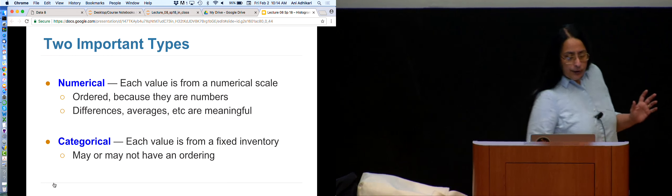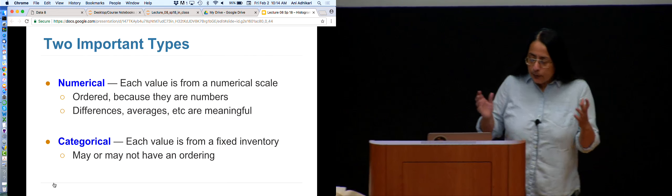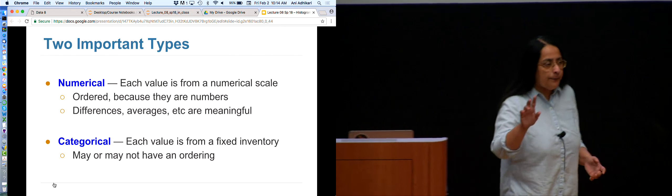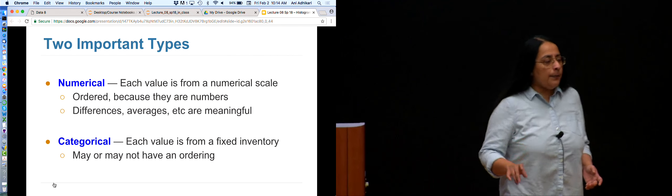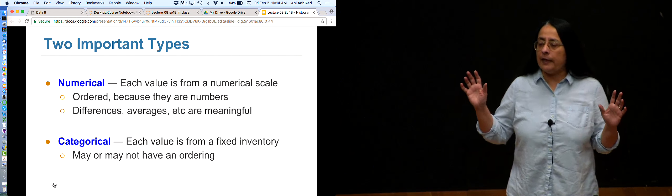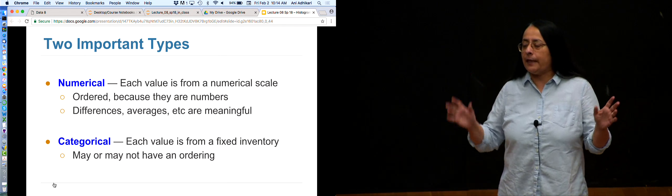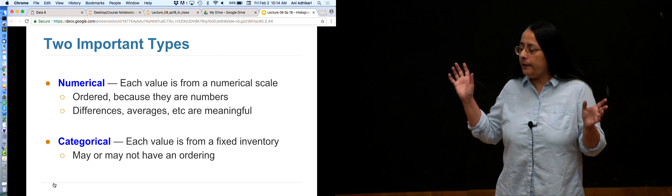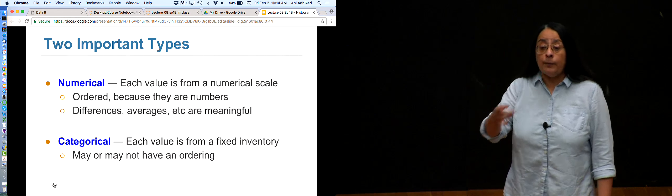These are two common types of data. There are many other types - data can be maps, music, anything. But numerical and categorical are two common types.